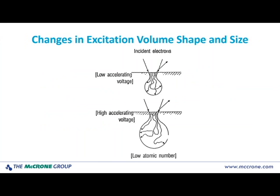The typical shape if we're looking at a piece of carbon is what's called a teardrop or pear-shaped excitation volume. We're rastering the area at the surface, but then it impinges into it, goes down a little ways, and starts interacting with the electrons and protons in the atoms of the specimen, and it swells. If we go from a low accelerating voltage to a higher accelerating voltage — maybe 5 kV to 30 kV — the excitation volume merely gets bigger: it swells, gets deeper and wider. So always keep that in mind.